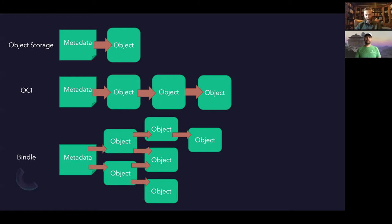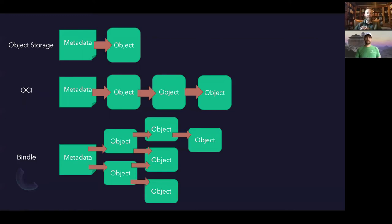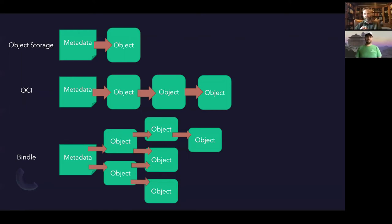Bindle is one step beyond that — the idea is that we should be able to express more complicated relationships between objects in a more tree-like structure, where we might have nine, eleven, or fifty different objects related in different ways. Later in this presentation we'll talk about grouping and feature flags as ways of indicating which particular objects within an aggregate object storage system we want to pull and how we want to configure them. I'll now pass it on to Taylor to talk us through the parts of Bindle.